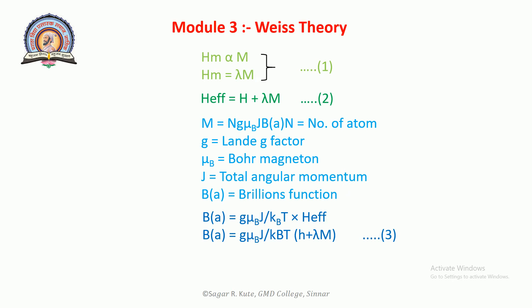The spontaneous magnetization exists even in the absence of external magnetic field, that is H equals 0. So equation 3 becomes: B(a) equals g mu_B J lambda M over k_B T. This is equation number 4. M(T) indicates that the magnetization depends upon temperature.